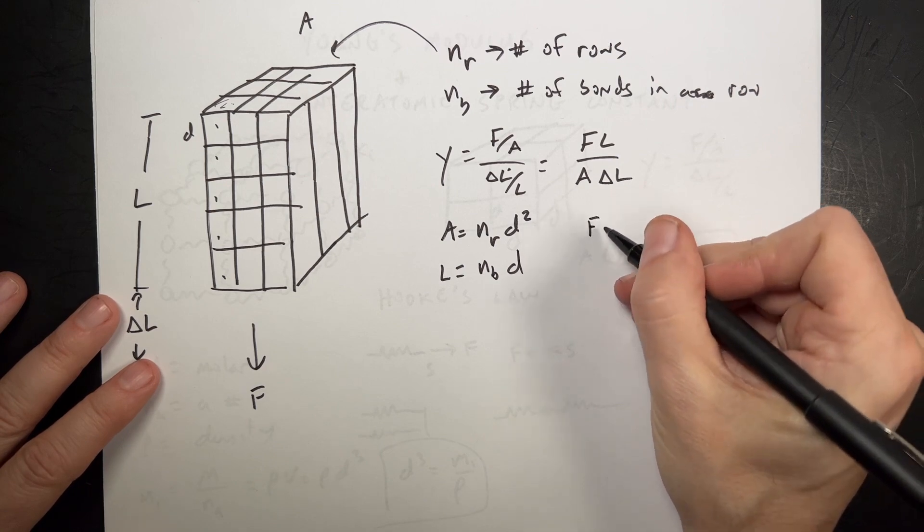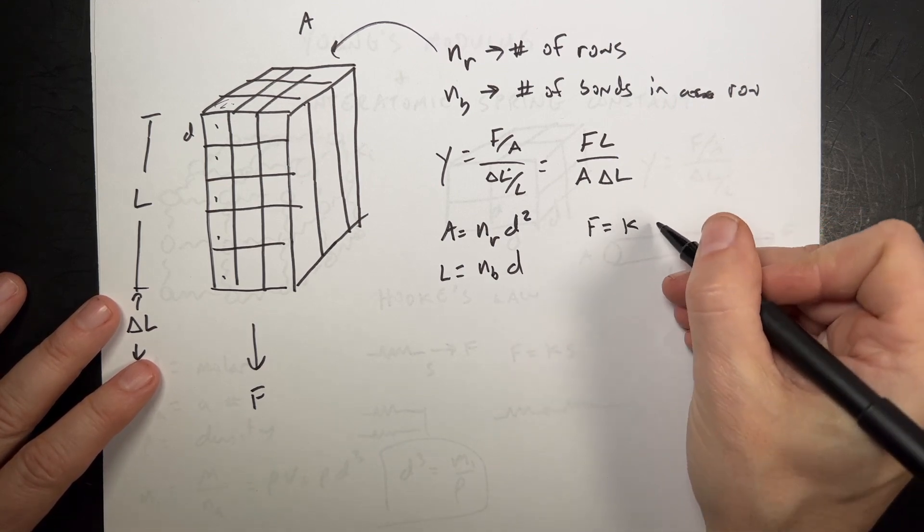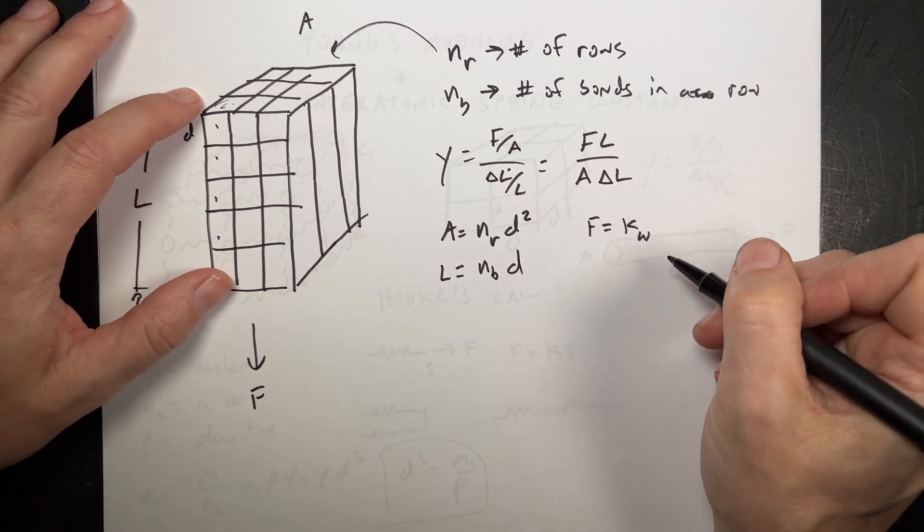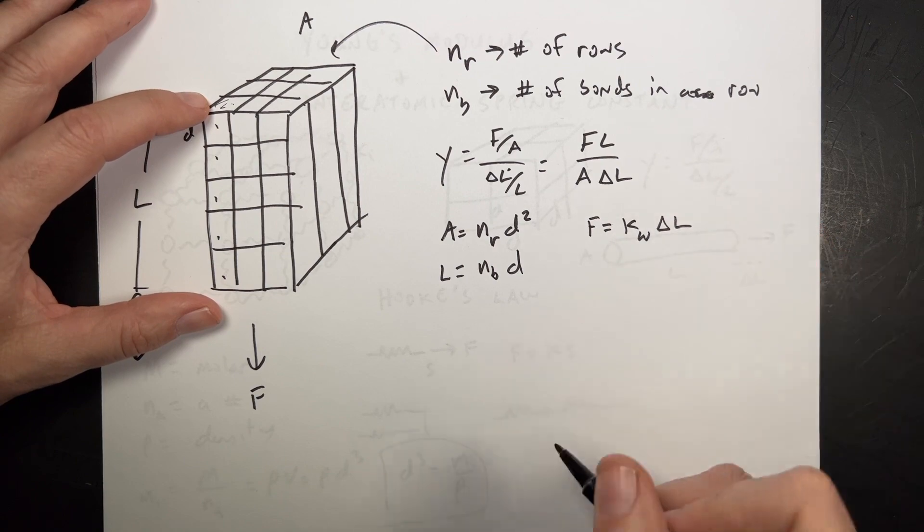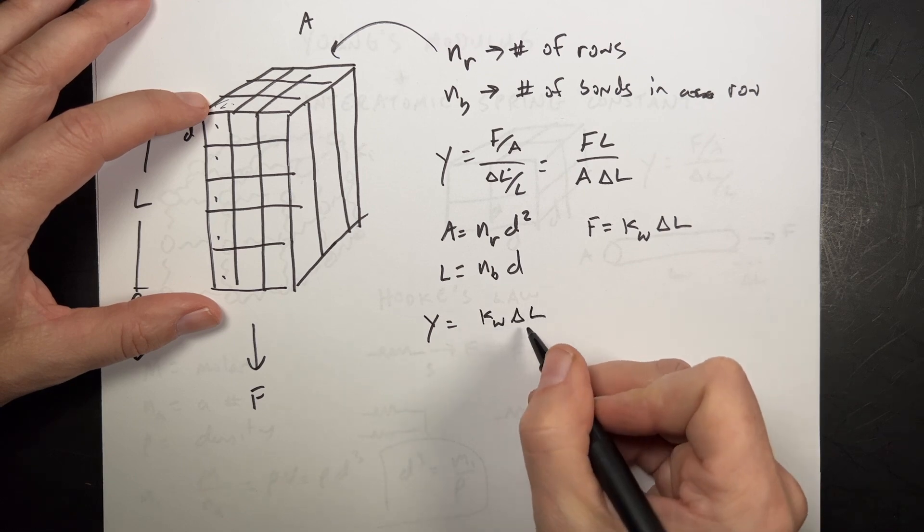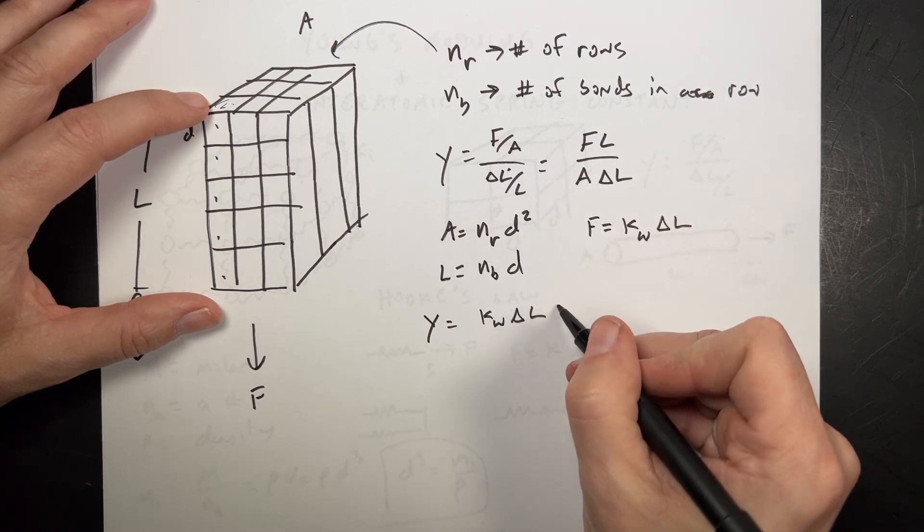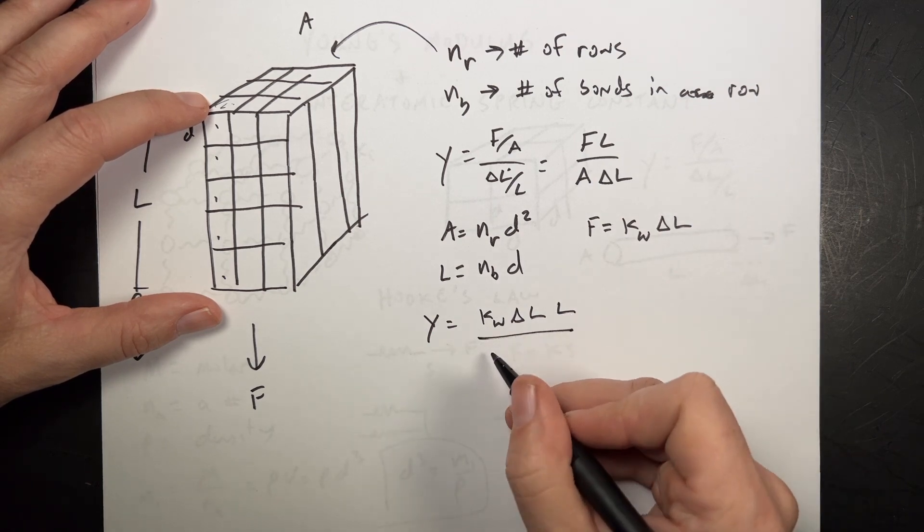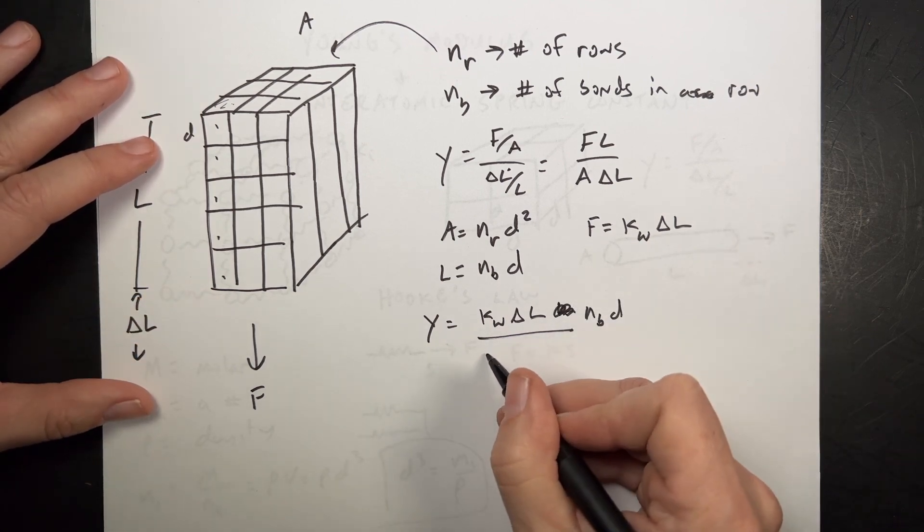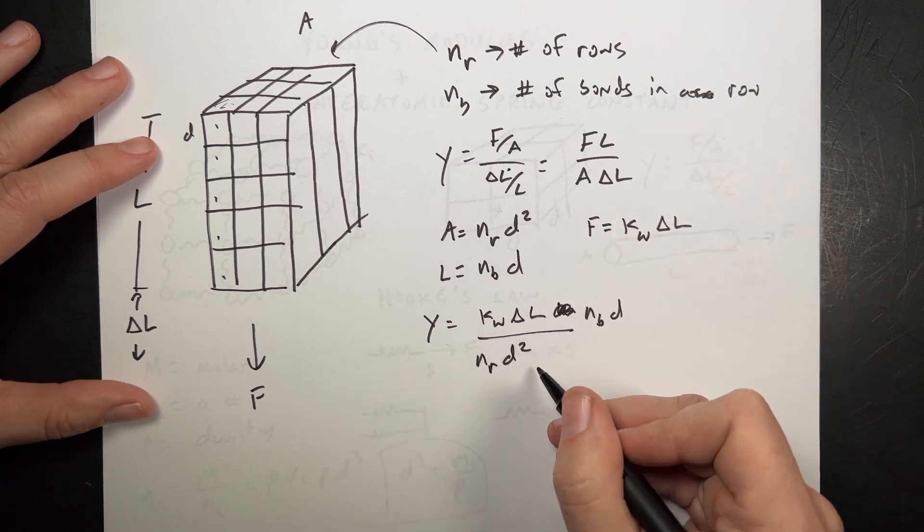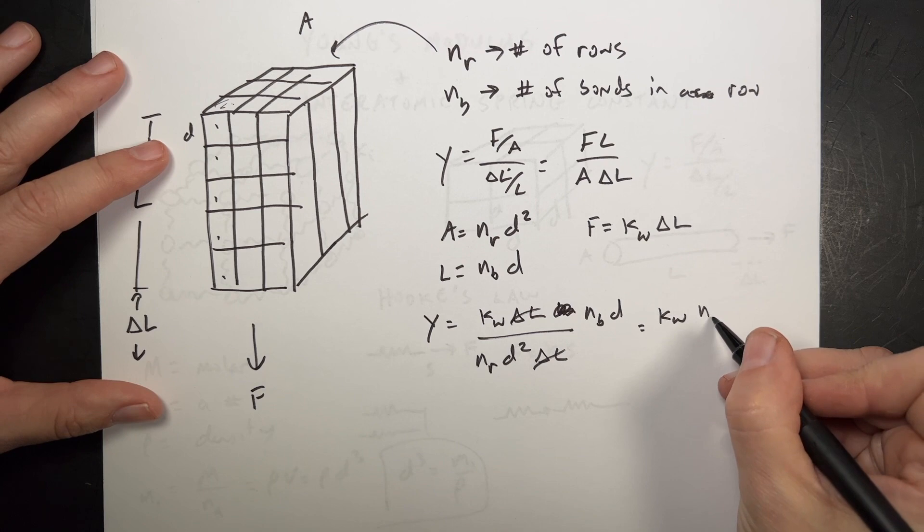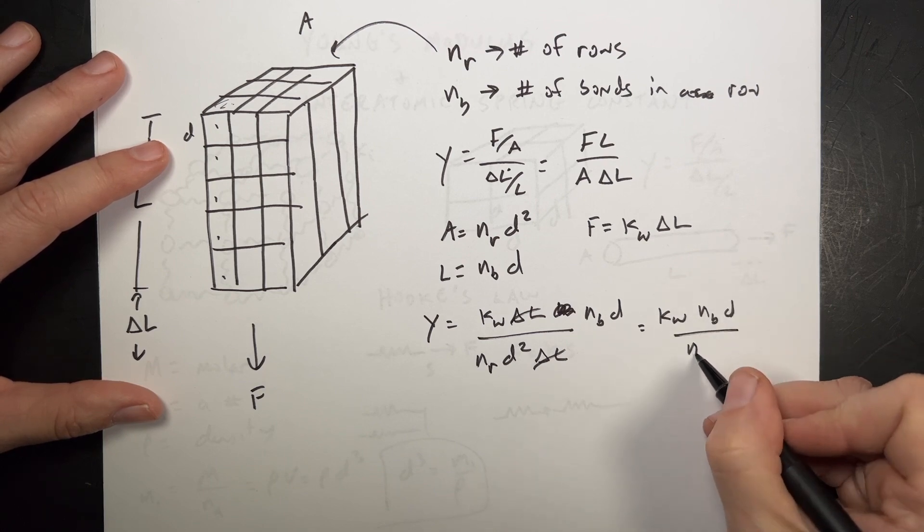And then F is my applied force. It's going to be equal to K delta L, right? And this is the K wire. This wire is a spring. So, it's K wire times delta L. That's from Hooke's Law. So, if I put all this together, I get Y equals the force K wire delta L times L over the area, which is going to be, I'm sorry, L is going to be equal to number of bonds times D. And this is going to be equal to the area, the number of rows times D squared. And then delta L. The delta L cancels. So, I get K wire number of bonds times D over number of rows times D squared.